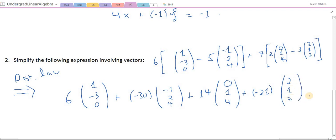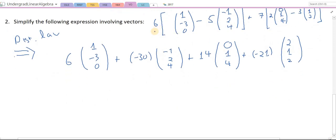So now I should be able to just do this kind of multiply and add, a little bit like inner product that we'll be seeing later. I'm going to have 3 components in the result. So this is going to be 6 times 1 plus minus 30 times minus 1 plus 14 times 0 and then plus minus 21 times 2.